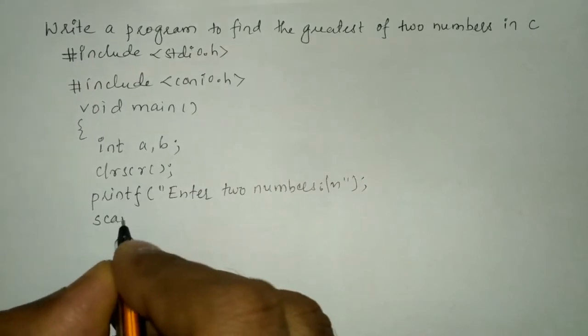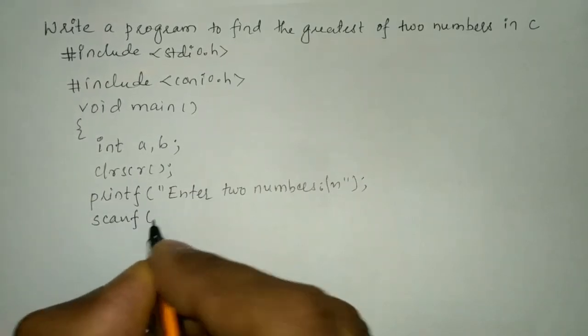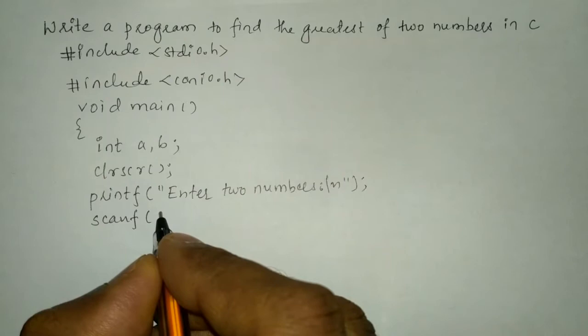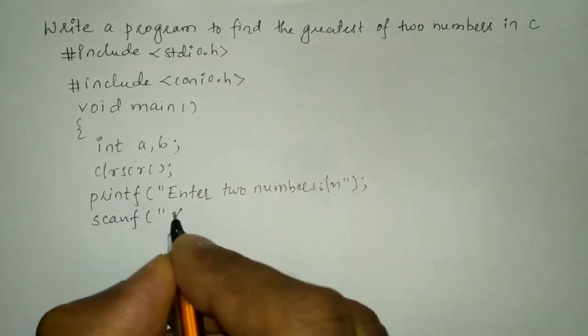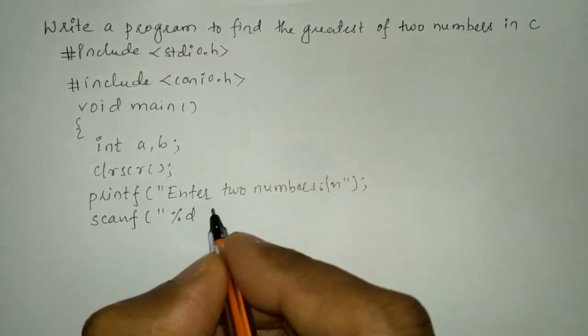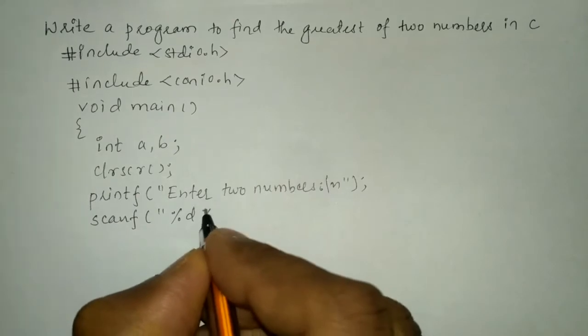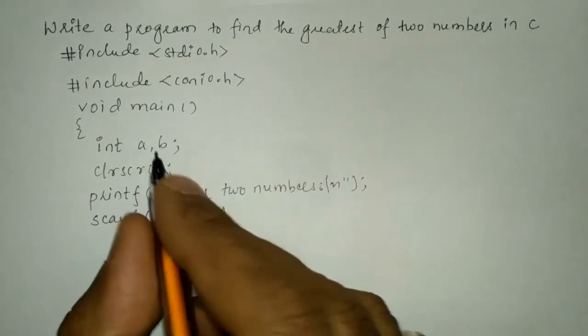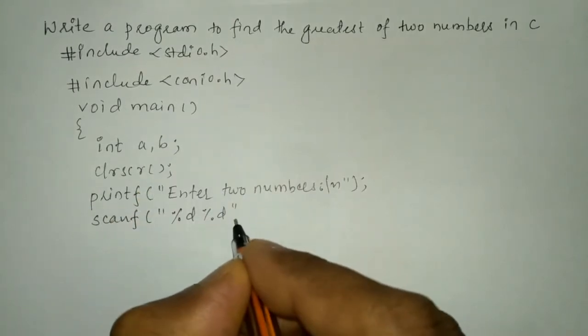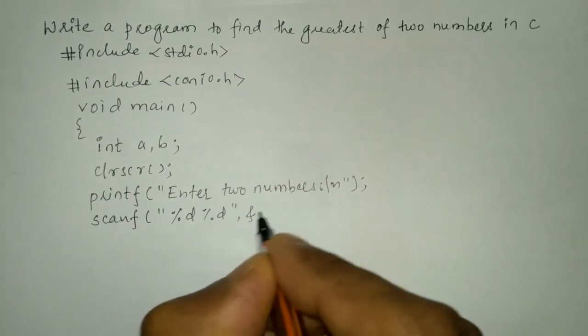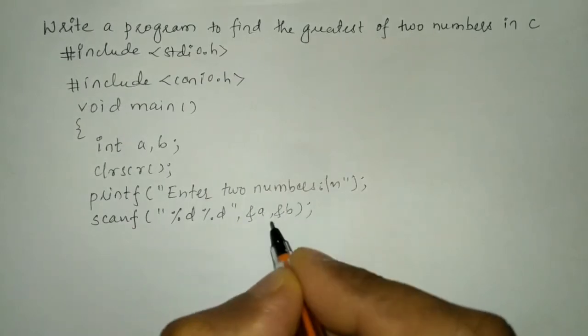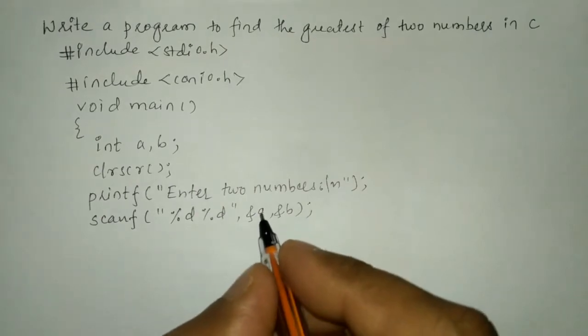Now in order to receive the two values I am going to use scanf function and here in a double quotation mark I am going to write a format specifier %d and %d for both a and b. So end the double quotation mark put comma ampersand of a and ampersand of b closing brace and put semicolon.